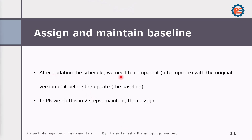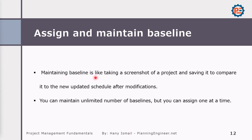After updating the schedule, we need to compare it with the original version before we can say we are ahead or behind. Maintaining the baseline is like taking a screenshot of the project and saving it to compare to the new update. We can maintain an unlimited number of baselines, but we can only assign one at a time. For example, you can maintain baseline number one, two, three, four — but you need to tell Primavera which one is assigned to this project in order to compare the data.